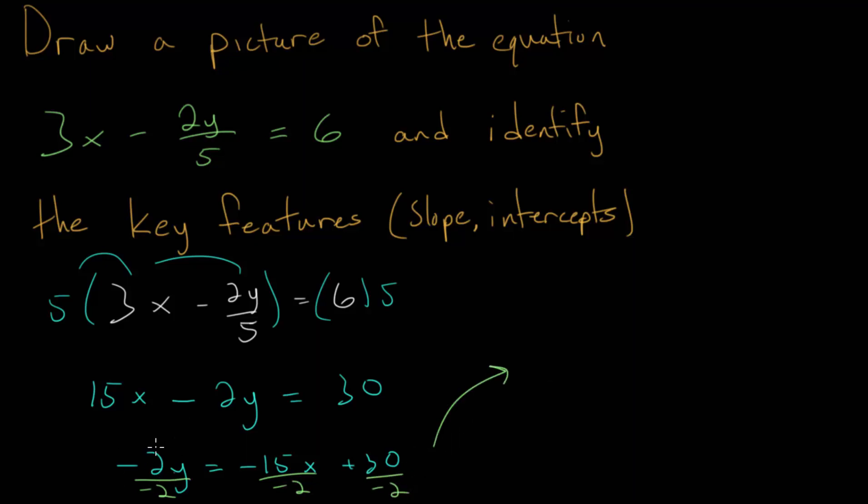On the left-hand side, we just get y. And on the right, we get 15 over 2 multiplied by x. The negatives cancel. And 30 over 2 is 15, but it's a negative, so we will be subtracting 15. And once you solve it for y, this is what we call the slope-intercept form.